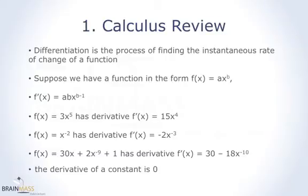Then we take one away from the exponent. So b is the old exponent. Now we take one away, so the new exponent would be b minus 1. So then the derivative of that function would be abx^(b-1).